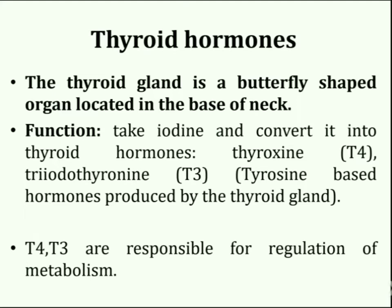Thyroid stimulating hormone TSH, which is produced by the pituitary gland, acts to stimulate hormone production by the thyroid gland. Later studies showed that an even more potent iodine-containing hormone existed, which is now known as triiodothyronine. Evidence indicates that thyroxine may be the storage form of the hormone, whereas triiodothyronine is the circulating form.